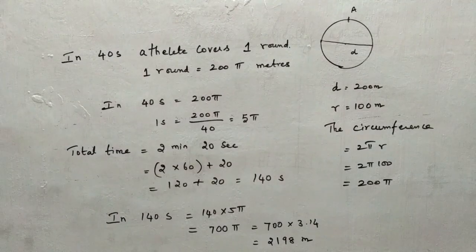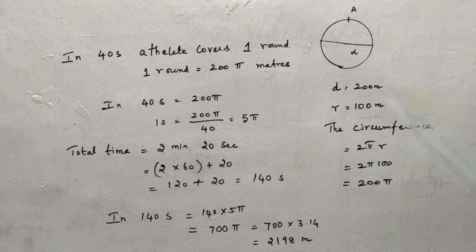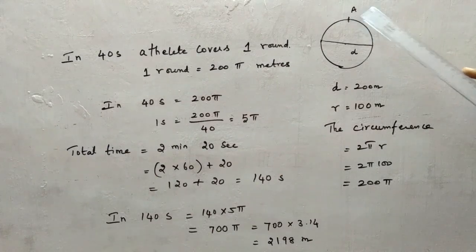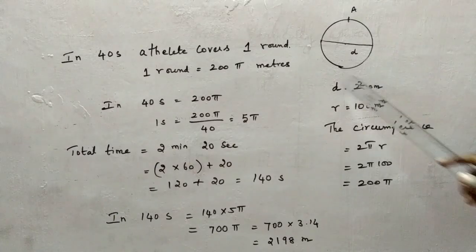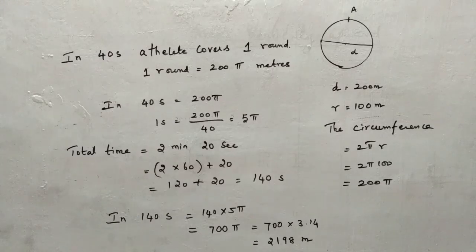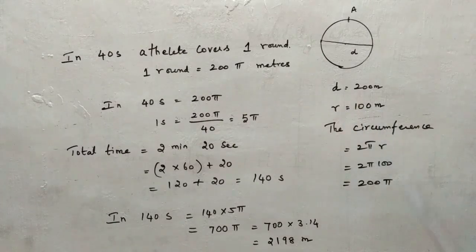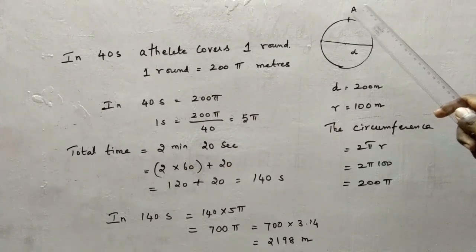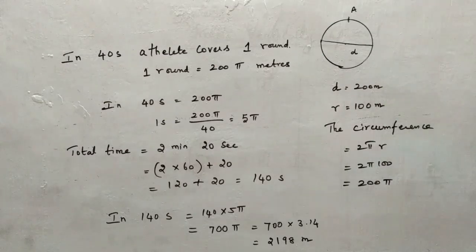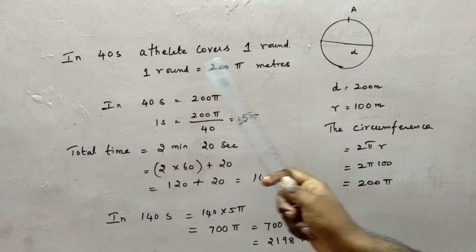The athlete is moving in a circular track of diameter 200 meters and radius 100 meters. Starting from point A and coming back to A equals one round. The distance covered in one round equals the circumference of the circle, given by 2π × r. With radius 100 meters, that is 2π × 100 = 200π. So the distance covered in one complete rotation is 200π meters.